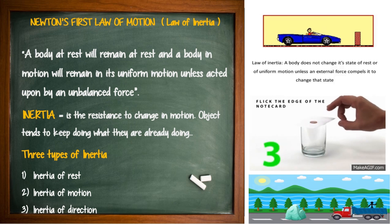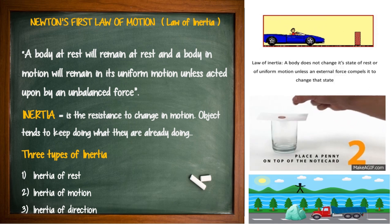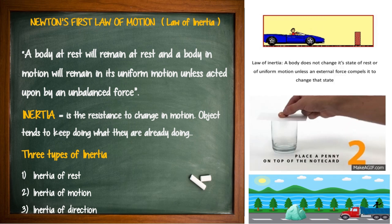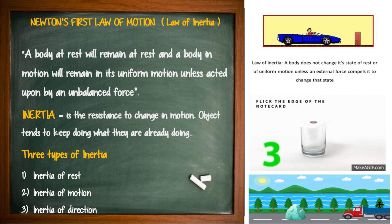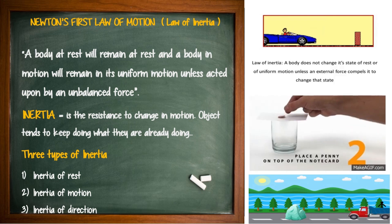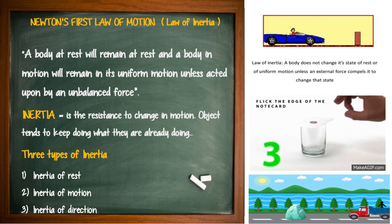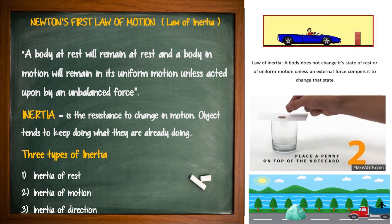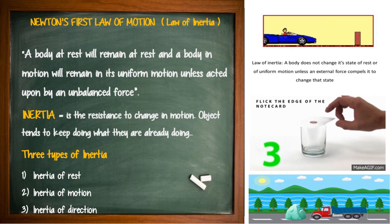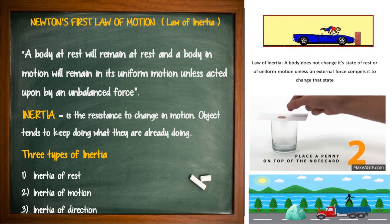Halimbawa, nagja-jogging tayo o tumatakbo tayo dyan sa complex. Meron tayong inertia of motion. Huwag tayong bigla-biglang titigil. Halimbawa, jogging ka, bigla kang titigil at bigla kang uupo — magkakaroon ng surge. Ma-imagine mo yung mga nangyayari sa dugo mo sa loob ng iyong katawan. Parang kumuha ka ng tumbler, lagyan ng tubig, itulak ng mabilis, bigla mong itigil — ganun ang nangyayari sa mga dugo at mga body parts natin.